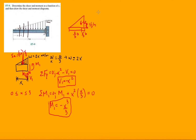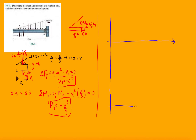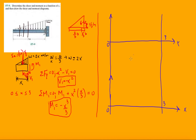Now let's set up our shear and moment diagrams. We're lucky to only have to do one cut. I'll do them in one graph — this is the way I was taught. Notice that for V the function is quadratic, and for M it's a cubic function. I'm going to plot multiple points at X equals 1, 2, and 3.